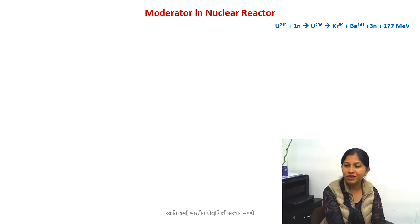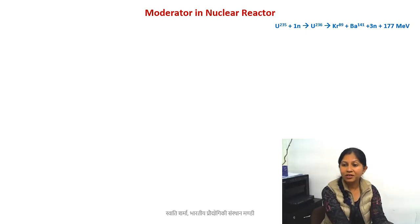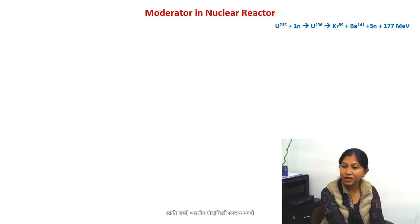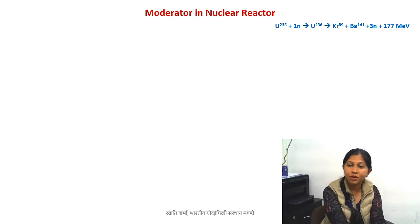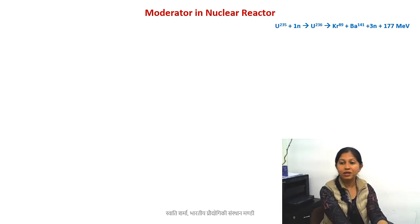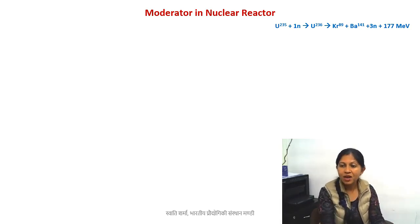Our concern is these three more neutrons — which one of them will actually participate in further fission reaction, or propagate the chain reaction? Can we control them? In a nuclear power plant we need a constant energy output because we are running a steam turbine, so we need this energy in a controlled fashion.